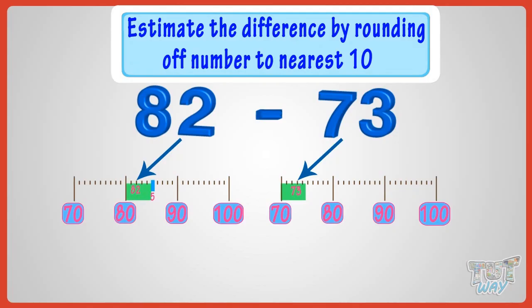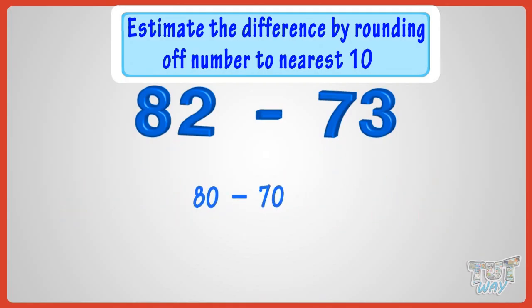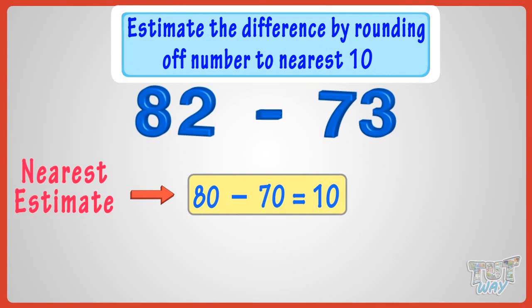Now, subtract the rounded off figures to calculate the estimate. 80 minus 70, we will get 10. So, the nearest estimate of 82 minus 73 is 10.